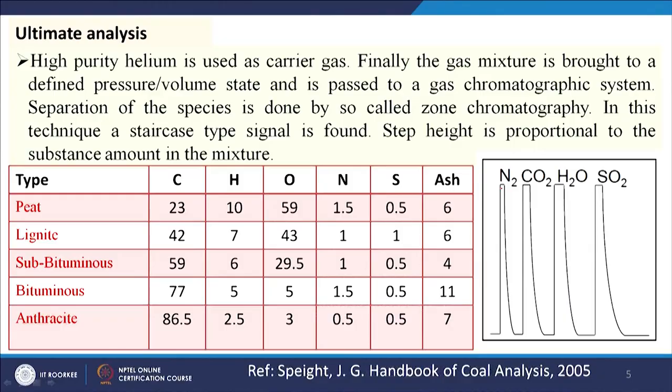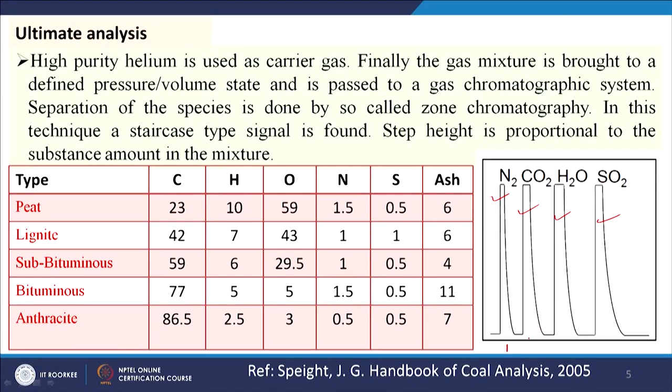These are the different steps for analysis of carbon, hydrogen, nitrogen, oxygen, and sulfur. The figure shows different peaks — nitrogen, CO₂, H₂O, and SO₂ — because of variation in interaction of these gas molecules with the stationary phase of the GC column. Retention time is different: since nitrogen is inert, its retention time is less than CO₂, then H₂O, then SO₂. The peak area gives us the relative concentration of the different gas components, from which we calculate how much carbon, hydrogen, nitrogen, and sulfur is present in the original sample.